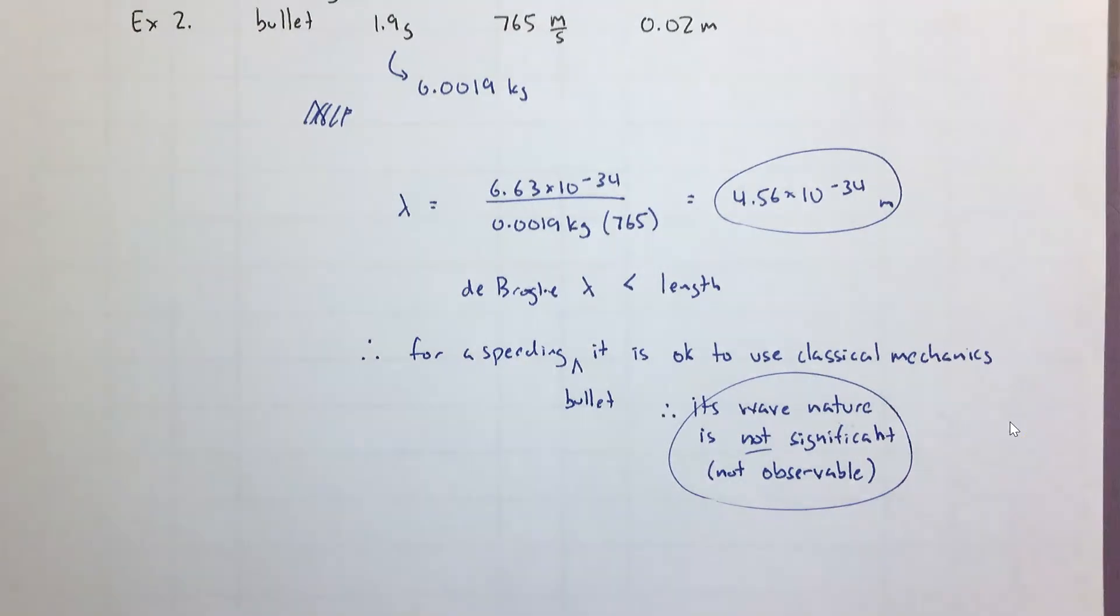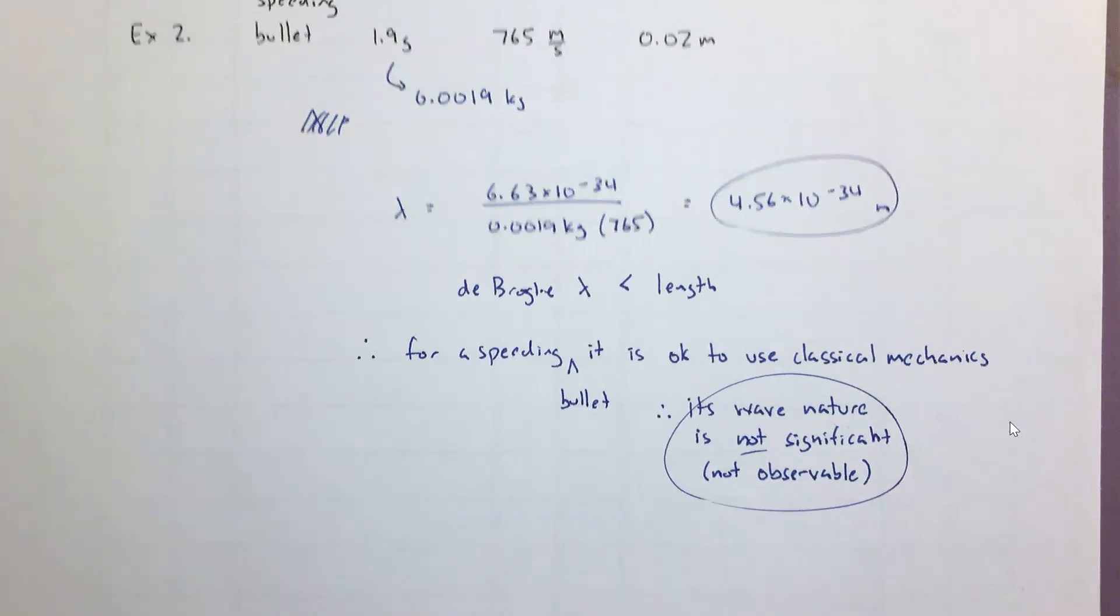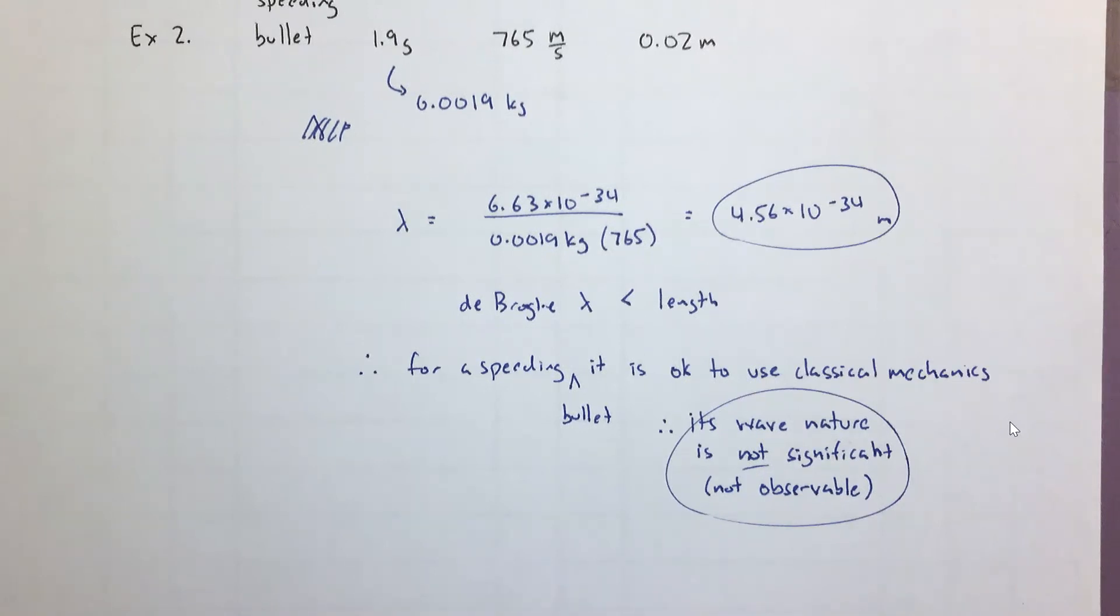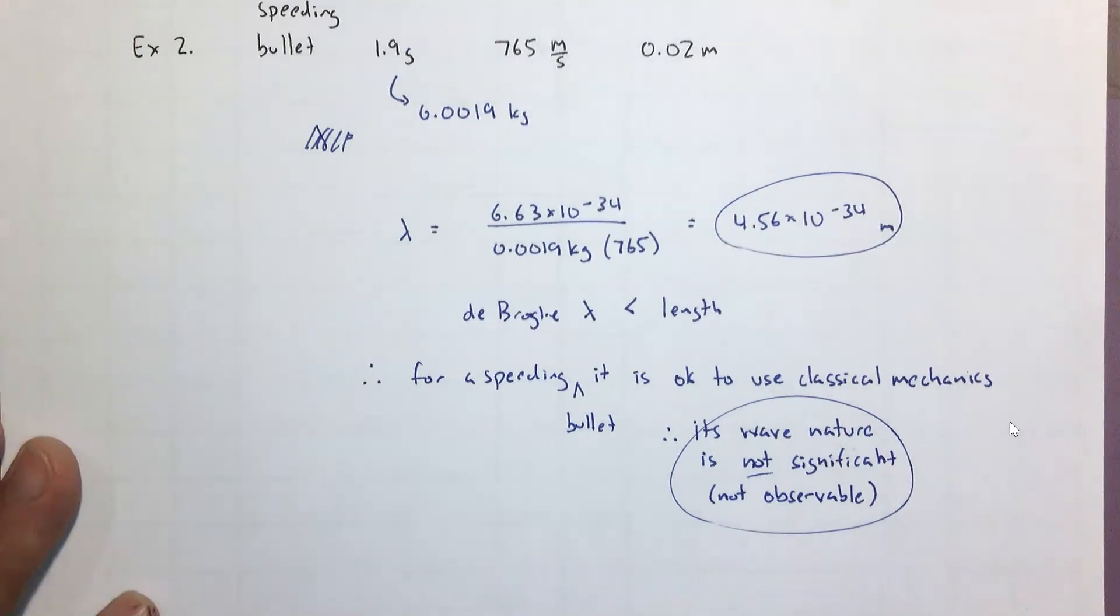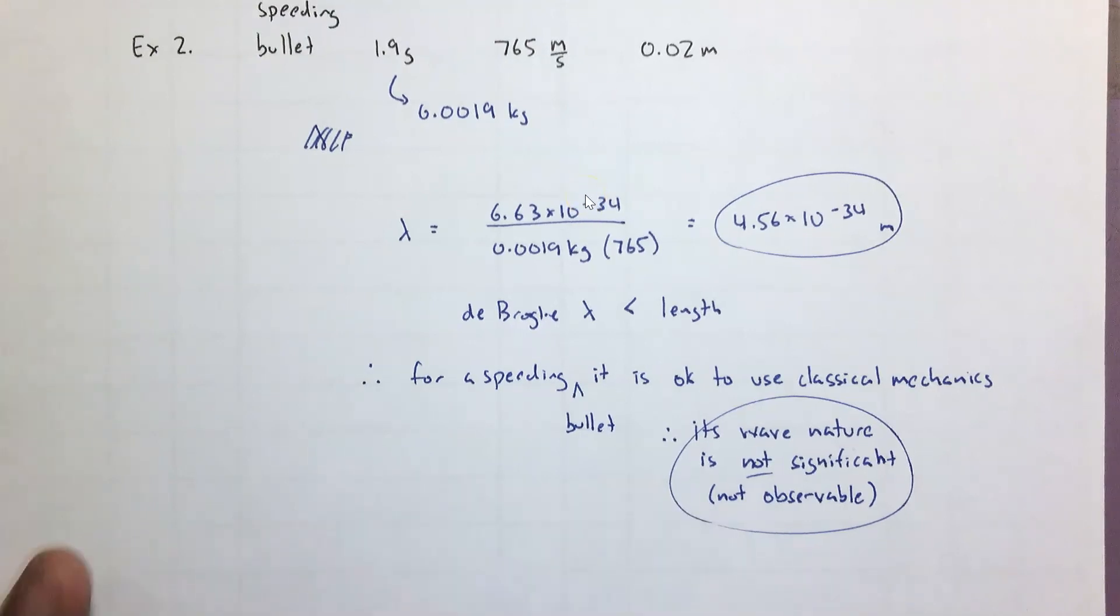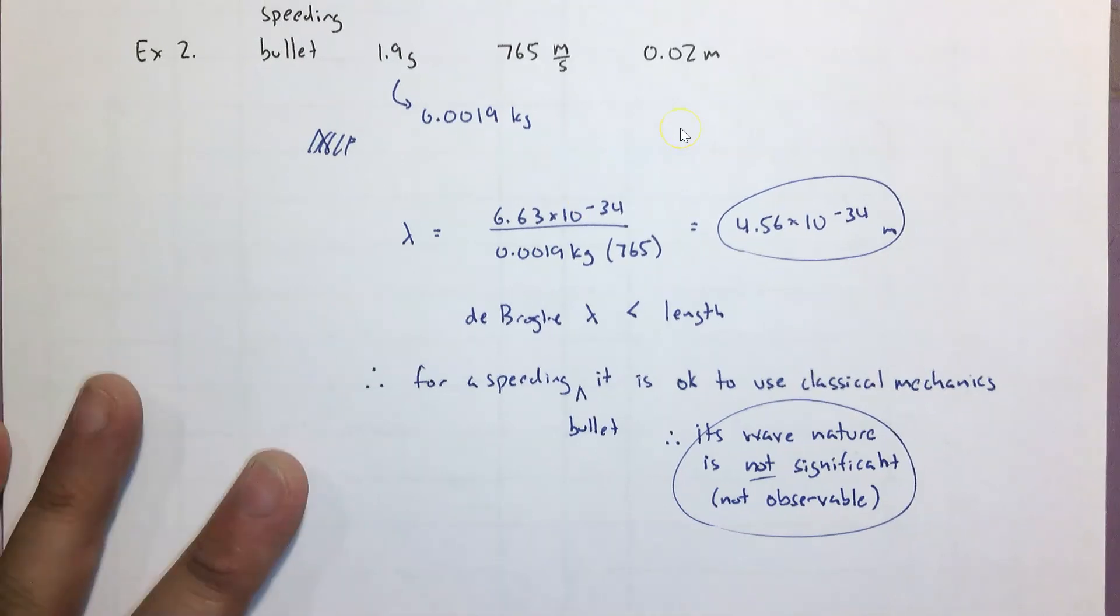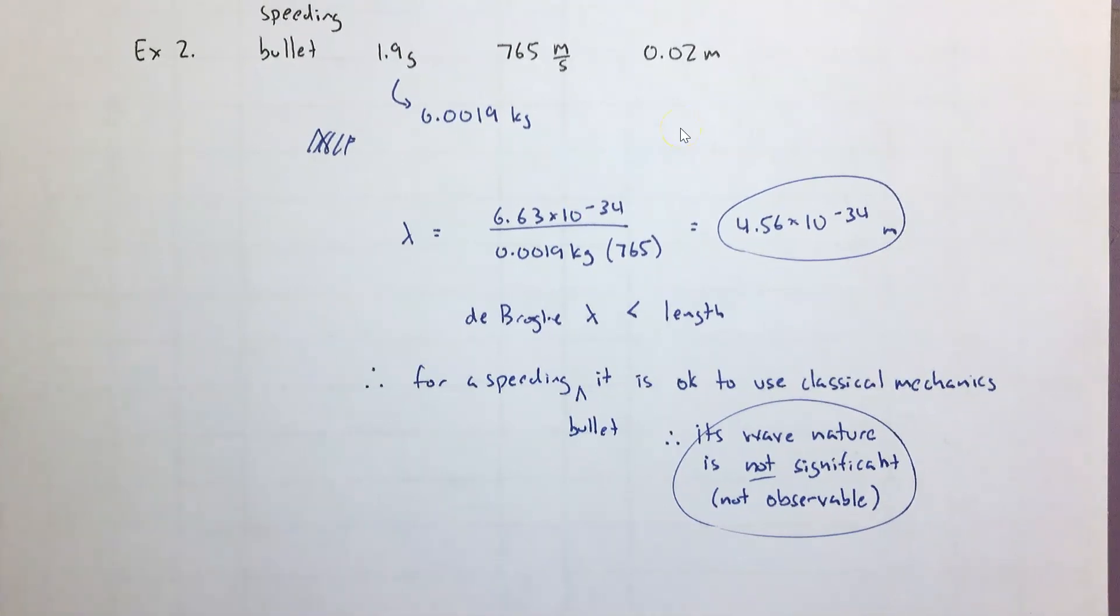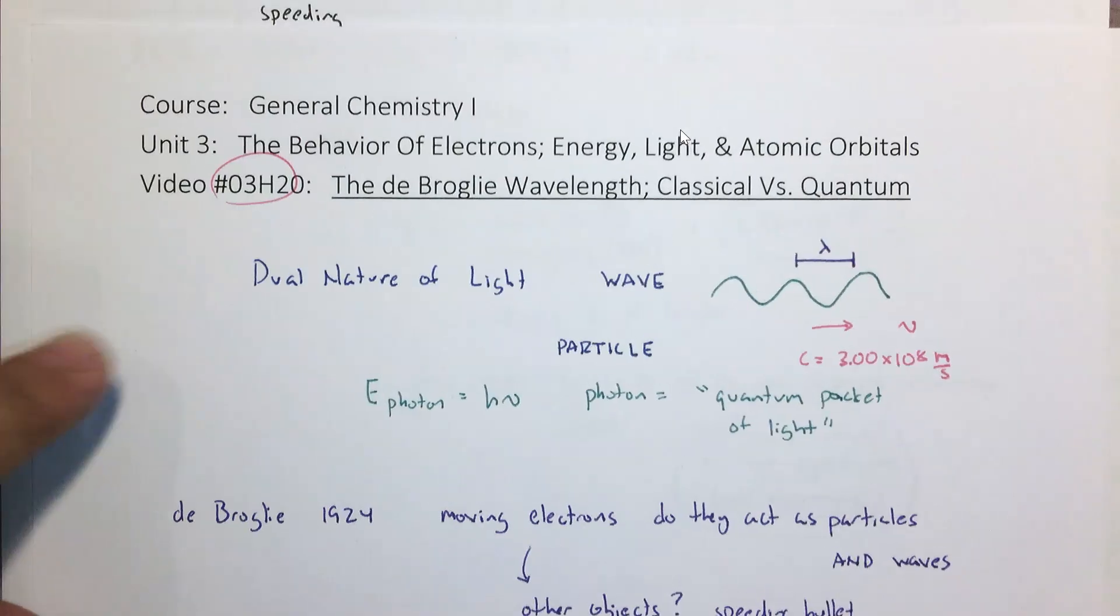And that's typically the case. Objects that you can see with the naked eye, no matter how fast they move, most likely are best described using classical mechanics. All right. And that's as far as I want to go, especially for a first year chemistry class. That's about the depth of knowledge that one would want to have concerning de Broglie wavelength and how to use it to determine whether an object is best described using quantum mechanics or classical mechanics.